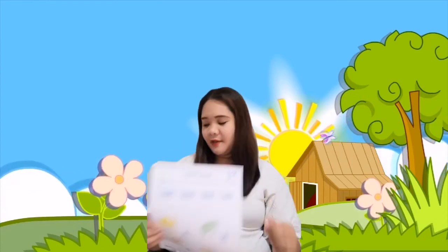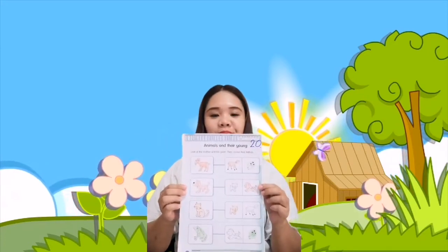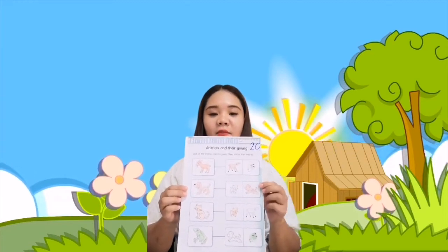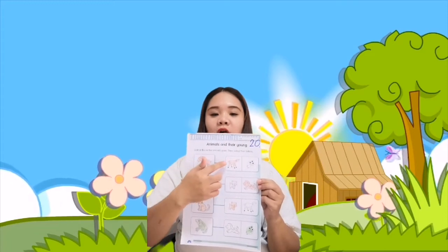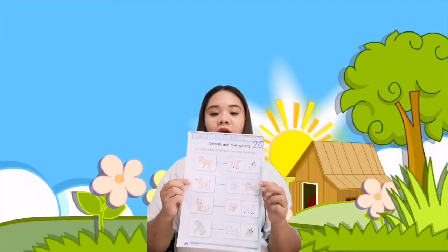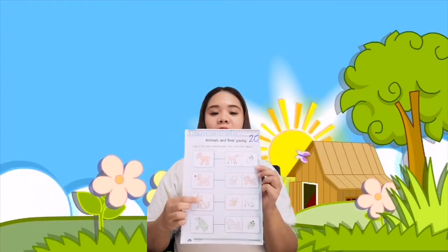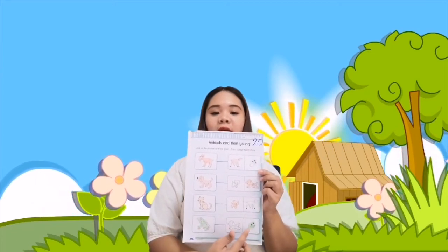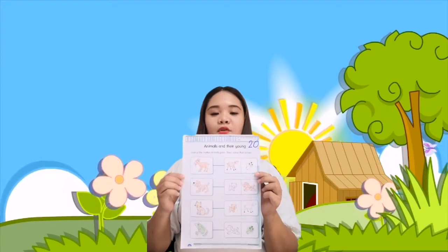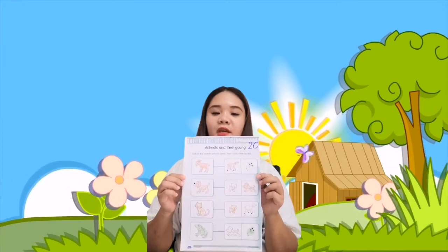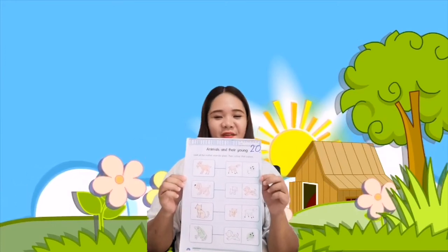Good job. Moving forward, you have page 20. It says here to color the correct young of each animal. Number 1 is the goat — color the kid and the goat. Next is the dog — color the puppy. Next is the cat — color the kitten. Next is the frog — color the tadpole. This is page 20 of your science book. Again, you can pause this video so that you can follow the correct answer.